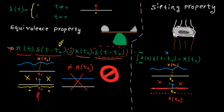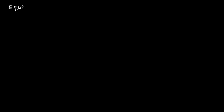Now, what is the concept of the integral? The integral basically means summation. So we have a bunch of zeros added together plus x(t0) plus other zeros. Therefore, the summation is equal to x at t0.